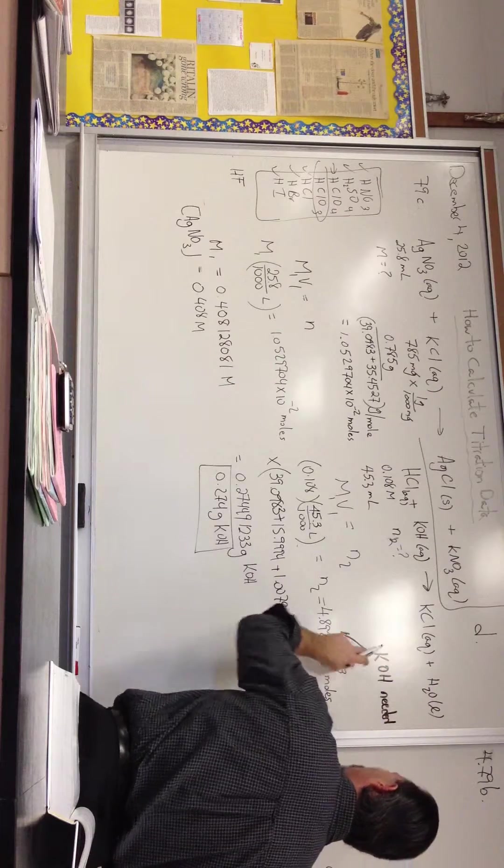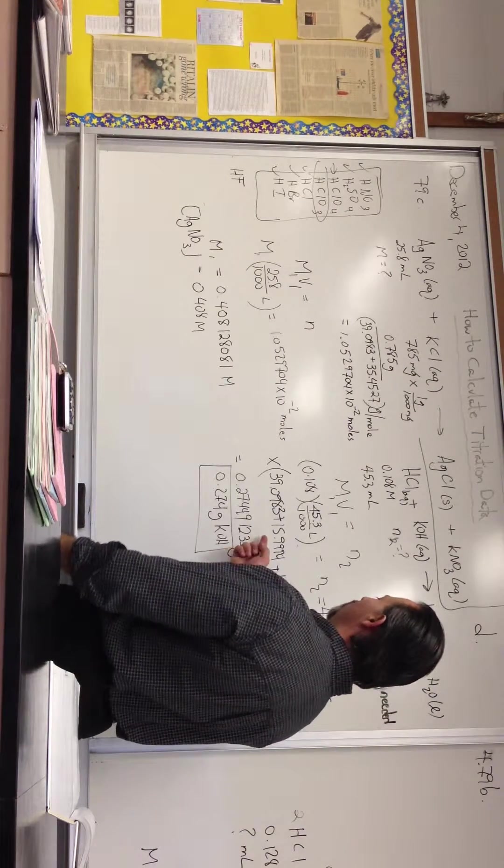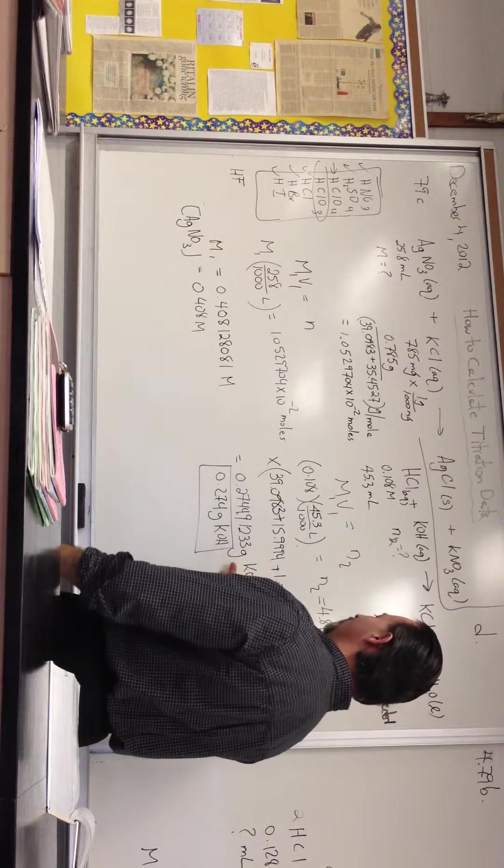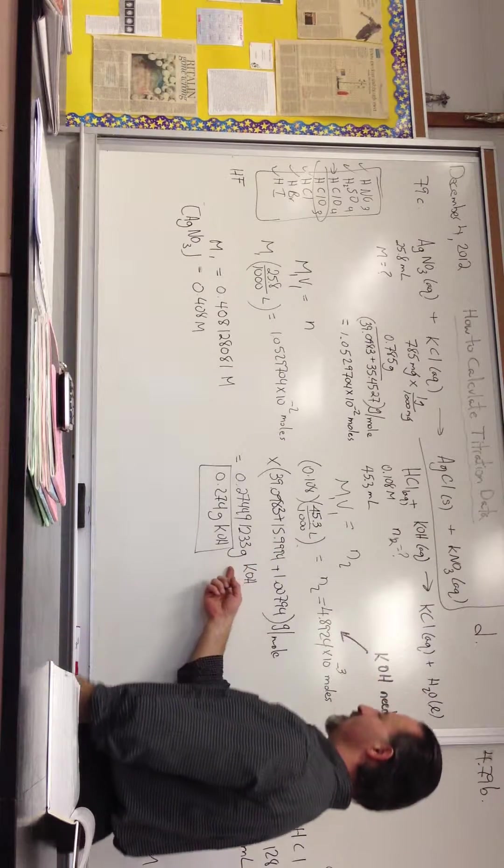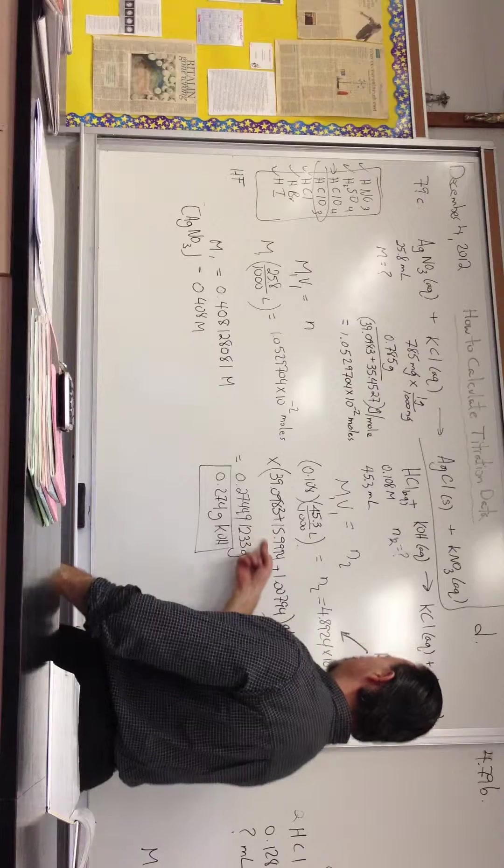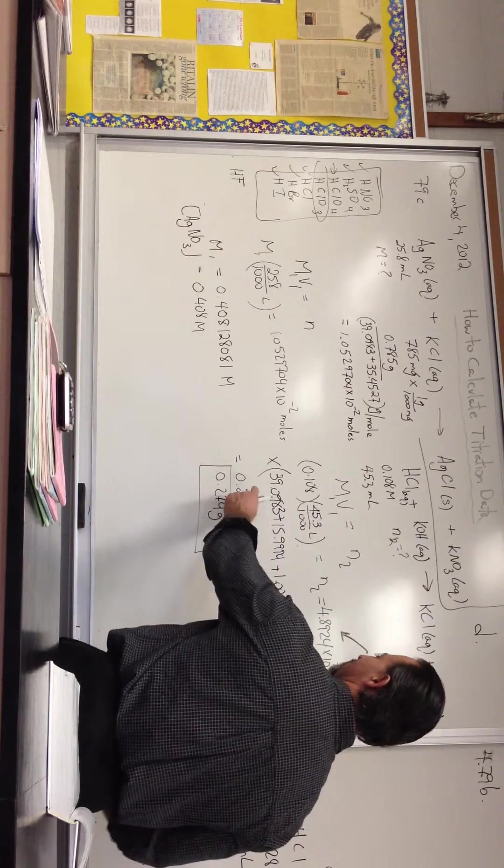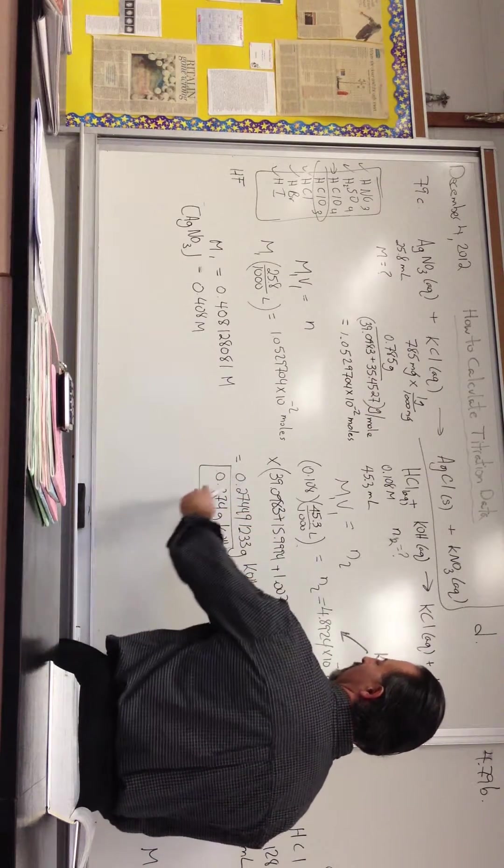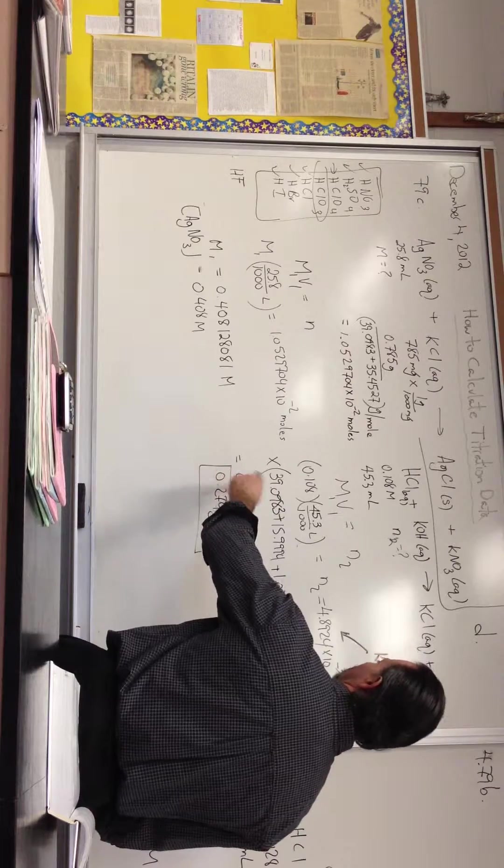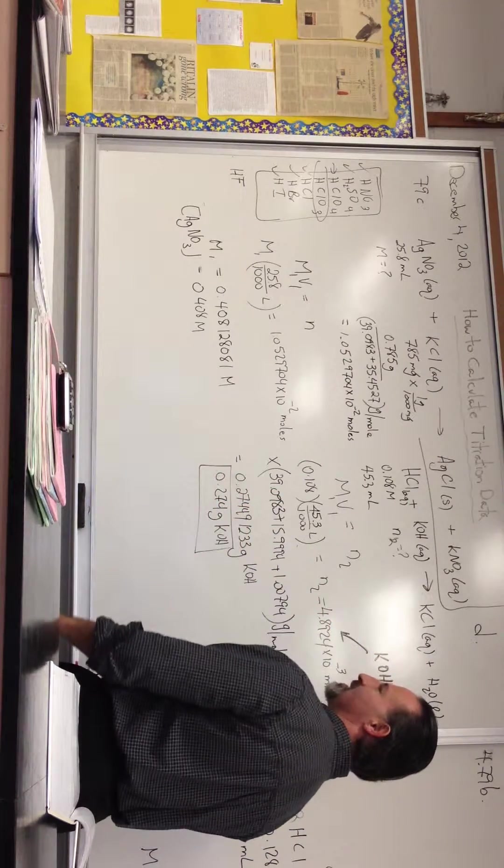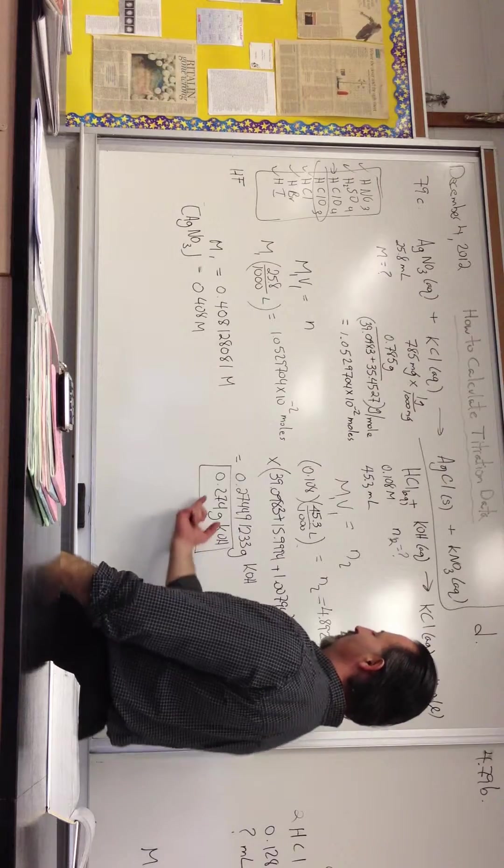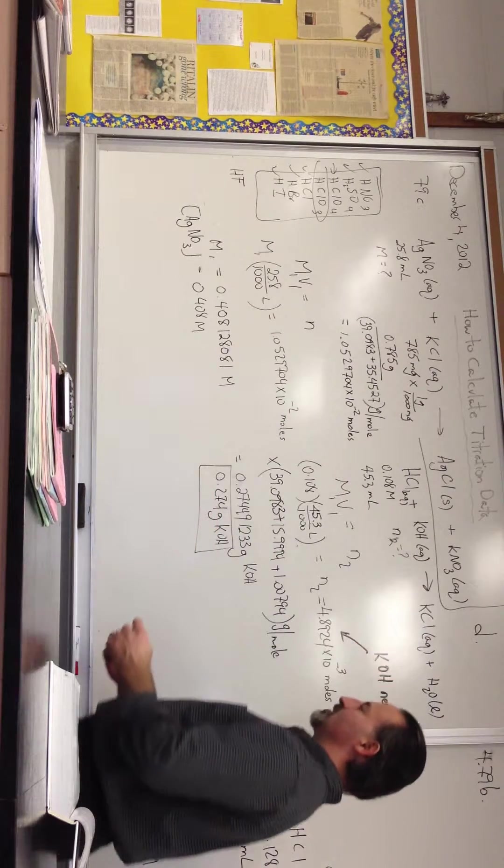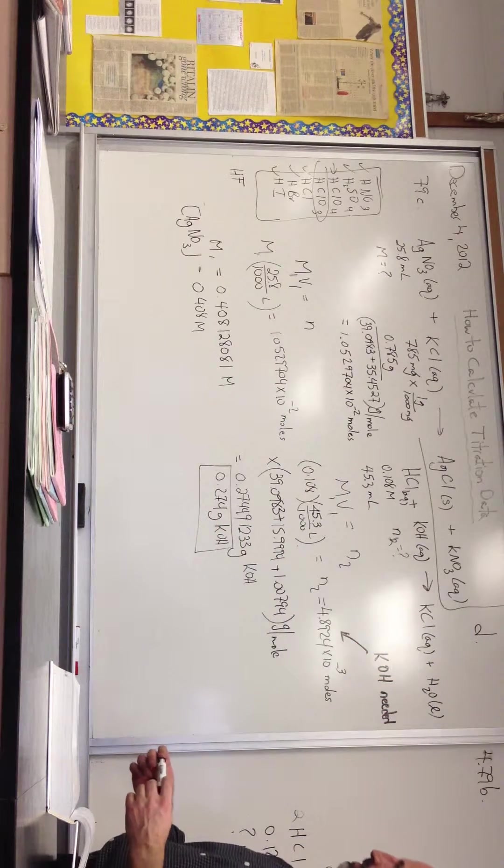So if you know how many moles you need, you need to multiply by the molar mass to find how many grams of potassium hydroxide you need. Here's the molar mass of potassium hydroxide, here's the potassium, here's the oxygen, here's the hydrogen. You add them all up and multiply it by this number, and it tells you how many grams of potassium hydroxide you're going to need. You get down to three significant figures, so we get 0.274 grams of potassium hydroxide.